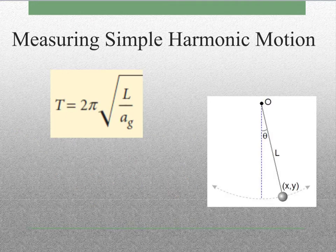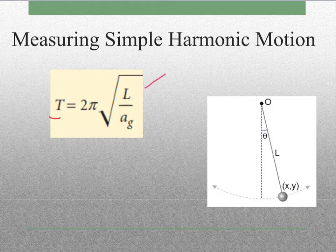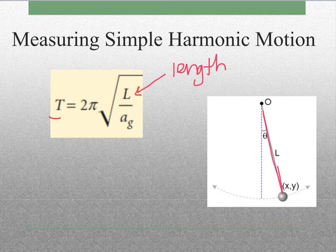We have this handy equation. The period is equal to 2π times the square root of L over ag. This is the length of the bob - excuse me, not the length of the bob, the length of the string from here to here.